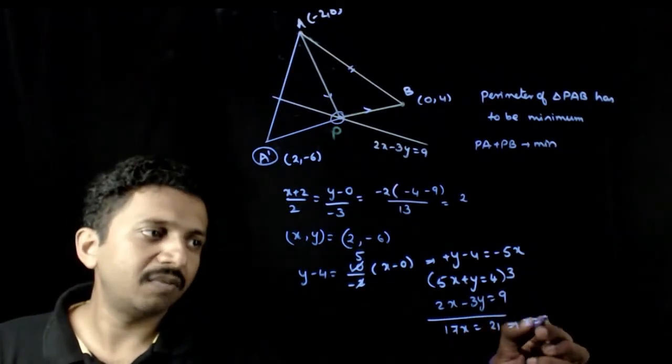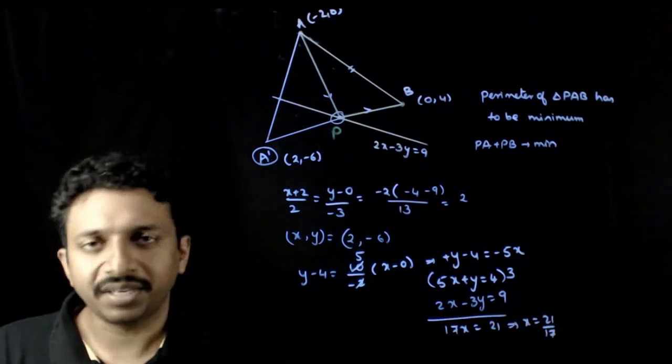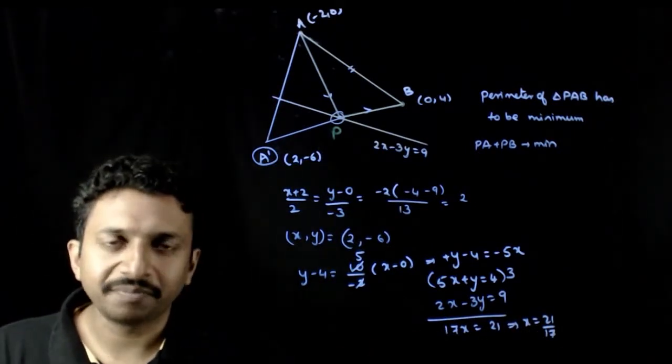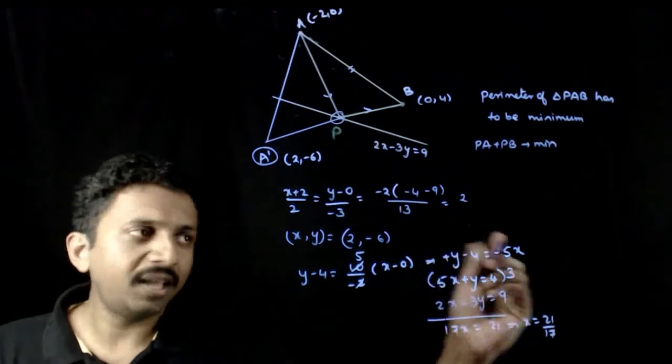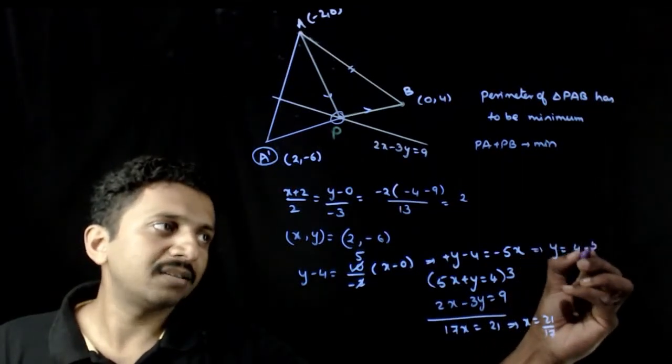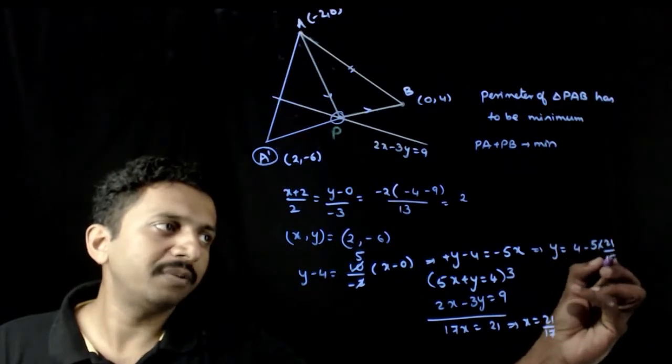So x equals 21/17. So x equals 21/17. And if you put y in the place of x, so y equals 4 minus 5 into 21/17.